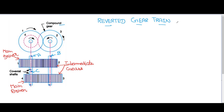Reverted gear train is a type of compound gear train. As we have seen in our previous classes, there are two types of gear train: number one is simple gear train, number two is compound gear train. This reverted gear train is just a modification of compound gear train.